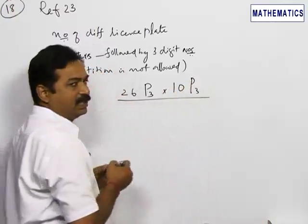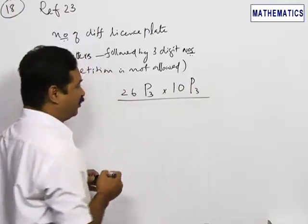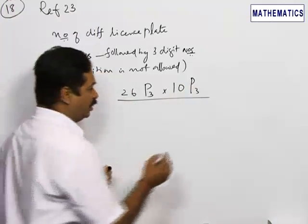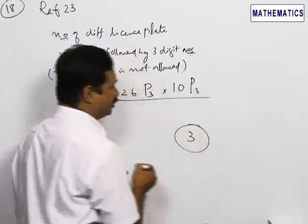So 26P3 into 10P3 ways are there. This is the total number of ways. So if you happen to see the choices, three is the correct choice.